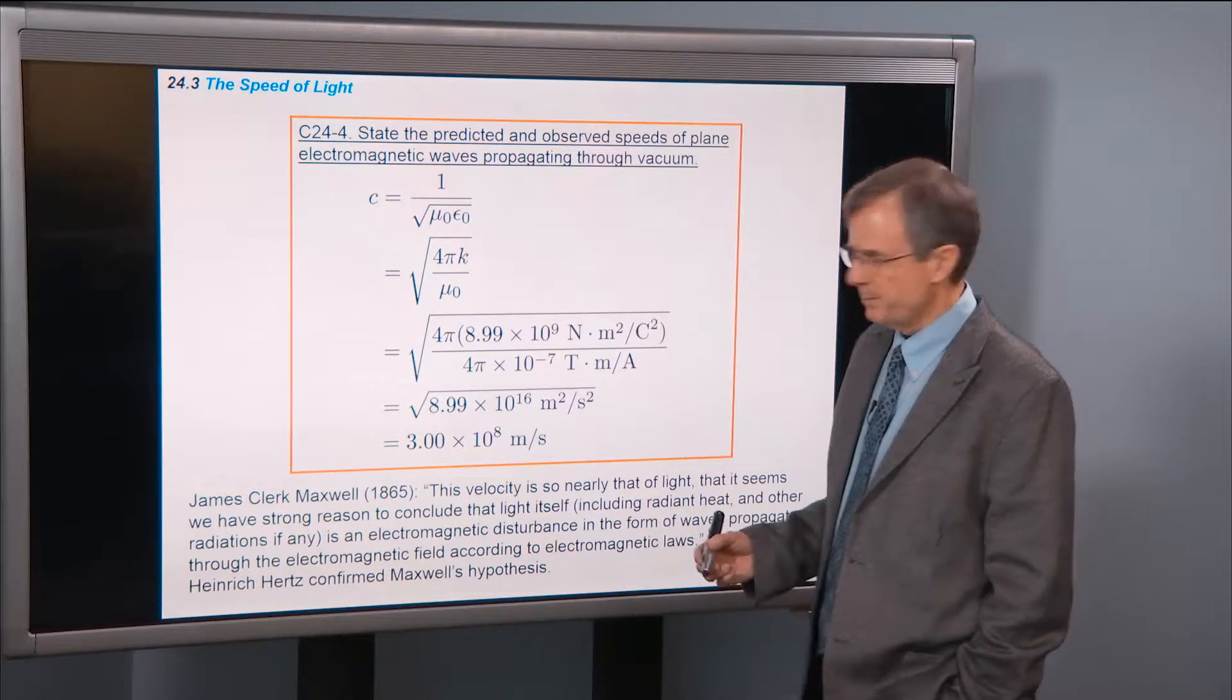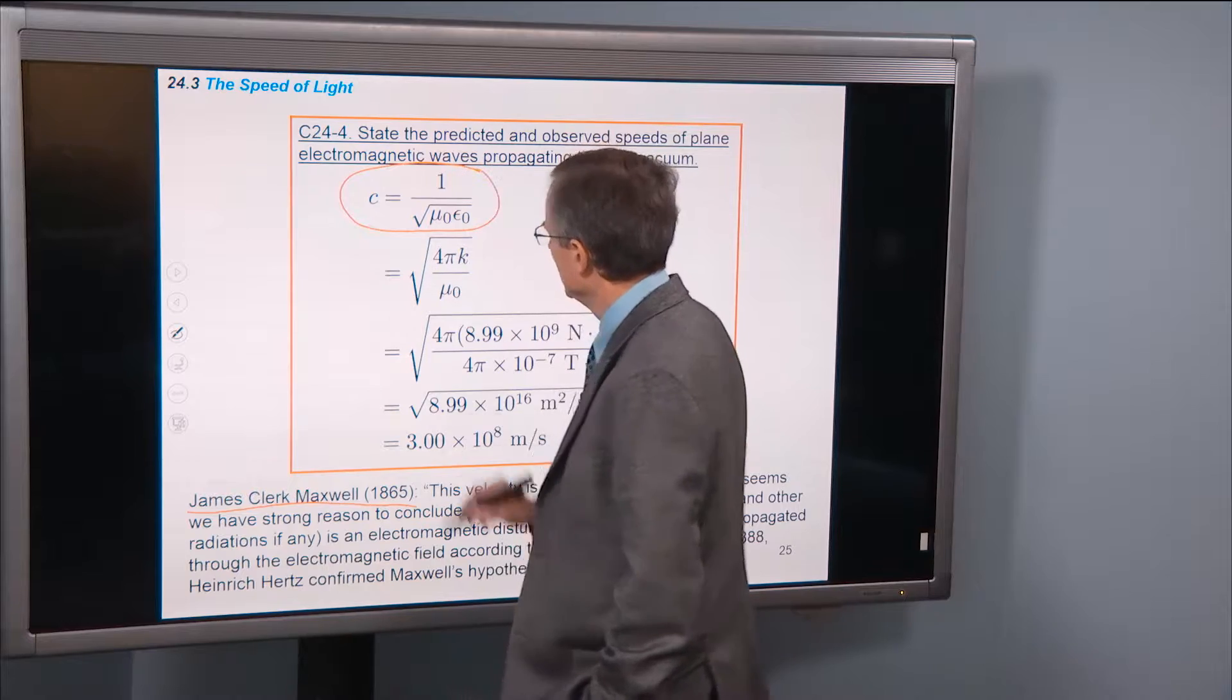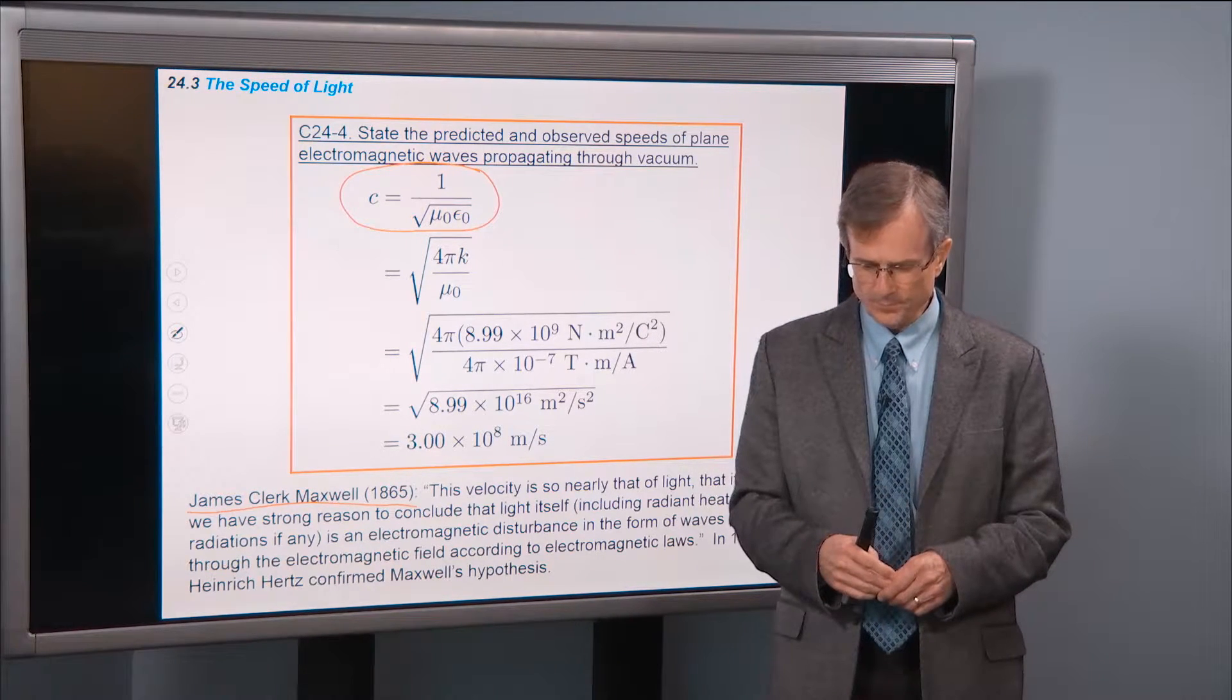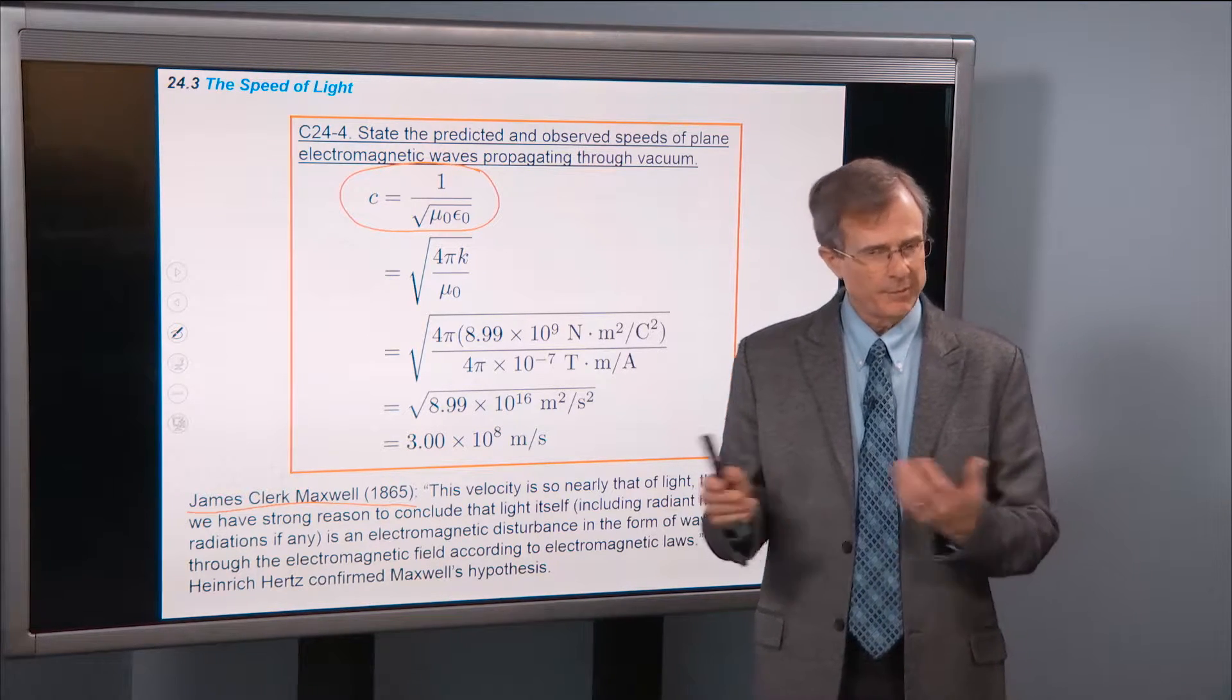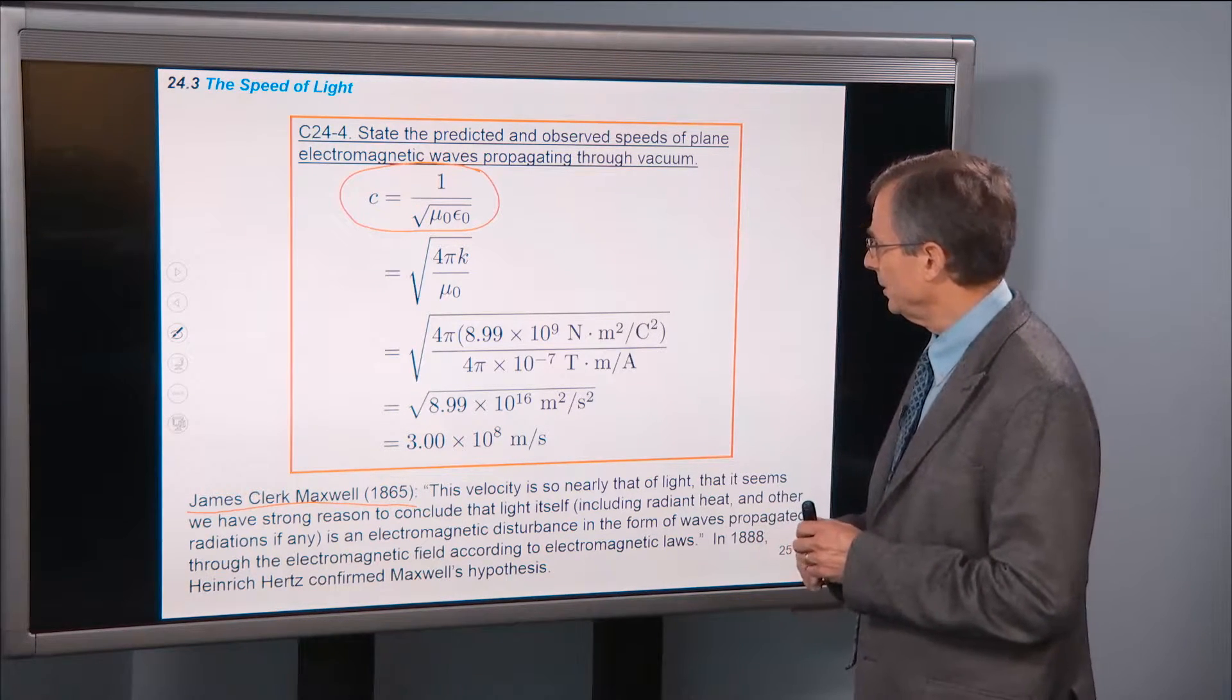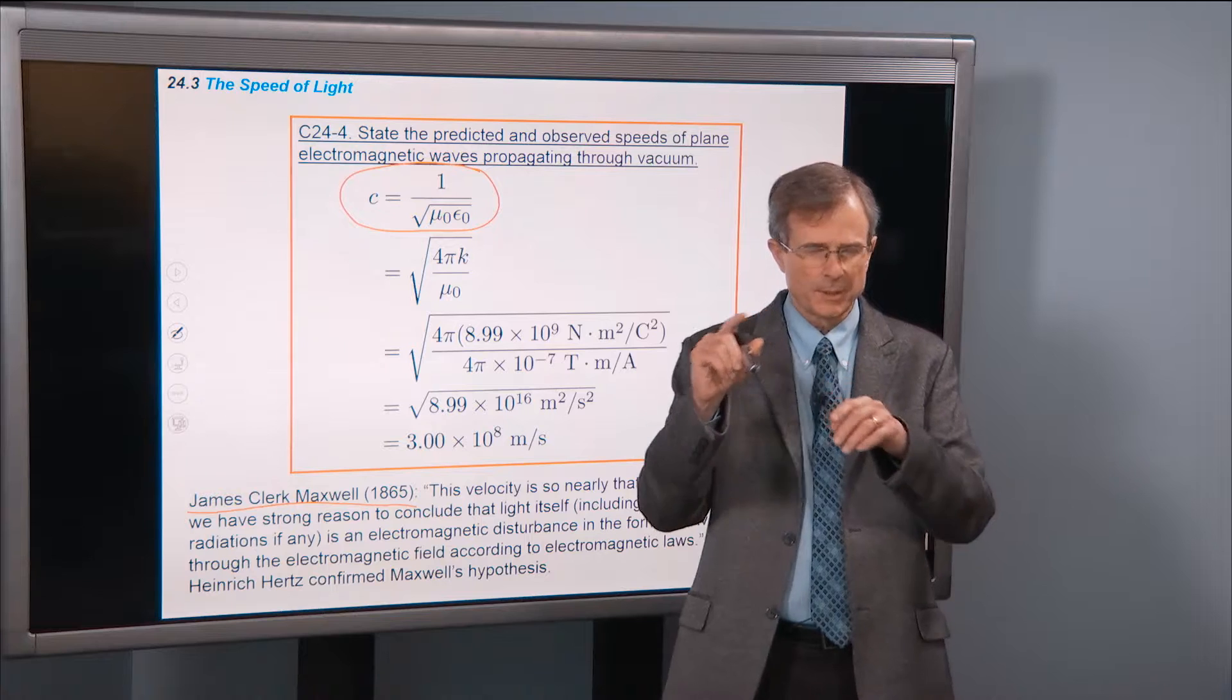James Clerk Maxwell was the fellow that came up with this equation. What he did is he put together Faraday's law, Ampere's law, Gauss's law, and Gauss's law for magnetism, some of which we've talked about already, Faraday's law for sure, and Coulomb's law, which is related, and he studied the propagation of electric and magnetic waves.